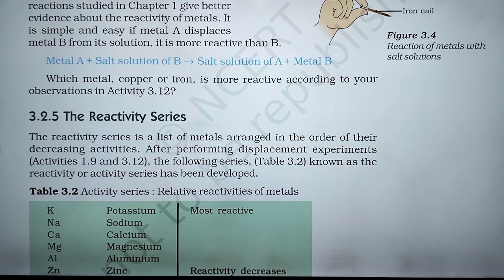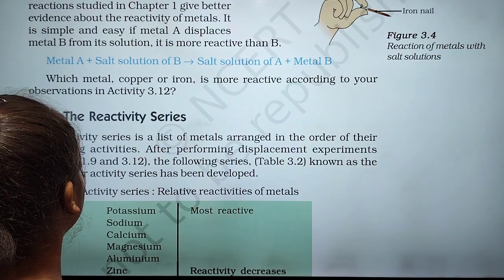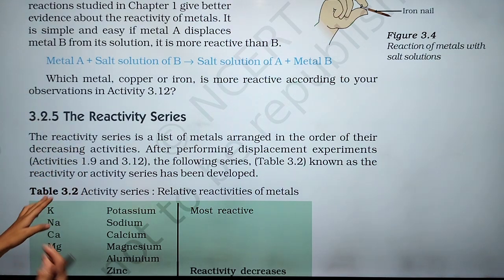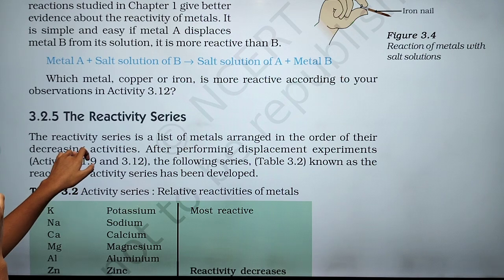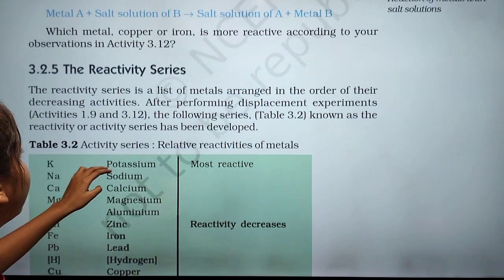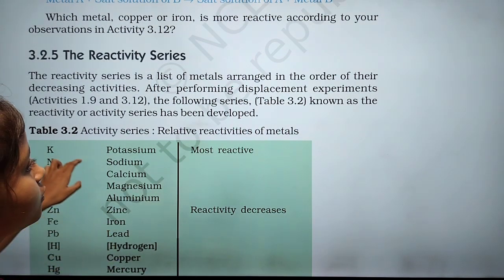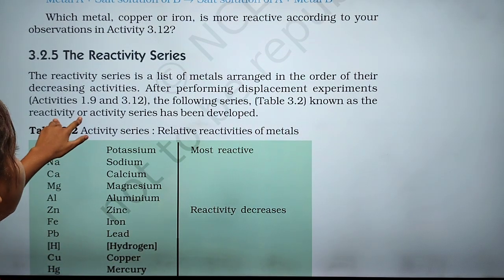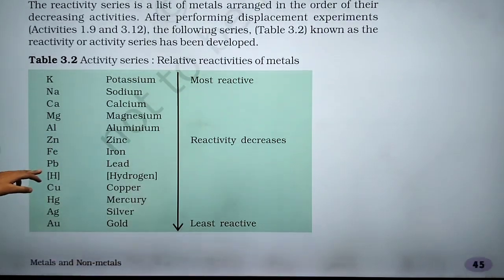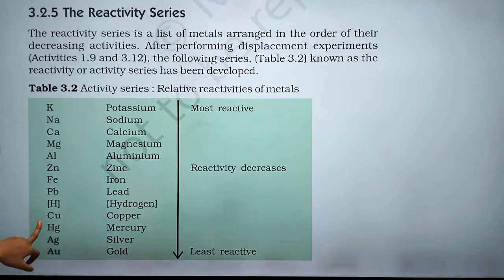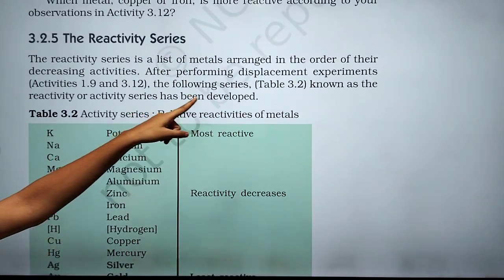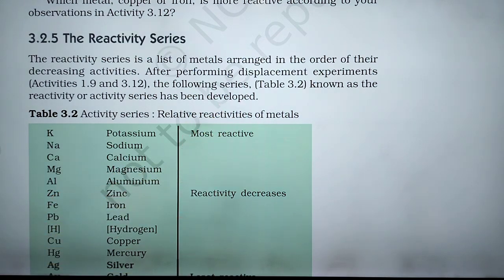Here is the reactivity series. The reactivity series is a list of metals arranged in the order of their decreasing activity. After performing the displacement experiment, the following series are known as the reactivity series. They are arranged in the order of their decreasing activity.